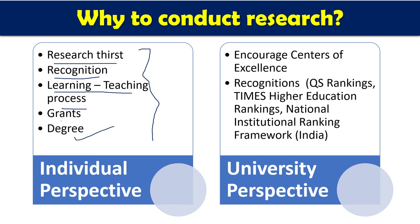Universities and organizations promote research because they need to be centers of excellence in their field. Universities also participate in rankings — nationally or internationally. Research plays a major role in rankings. For example, in NAAC, roughly one-fourth of the points are based on research. Similarly, NIRF, Times, and QS rankings all have research as a major criteria, and recognition provides universities name, fame, and other benefits.